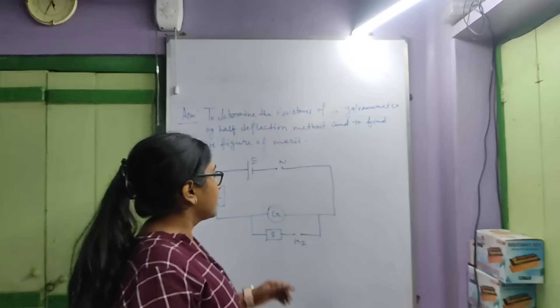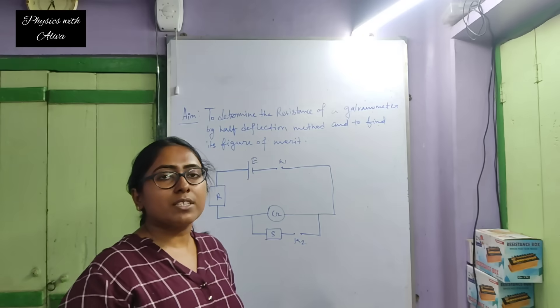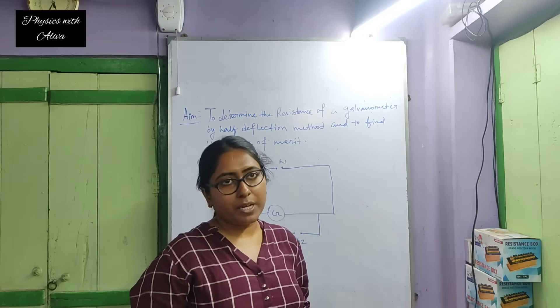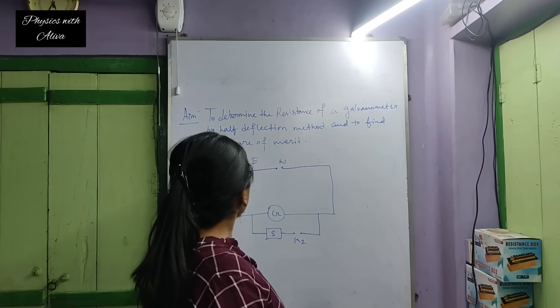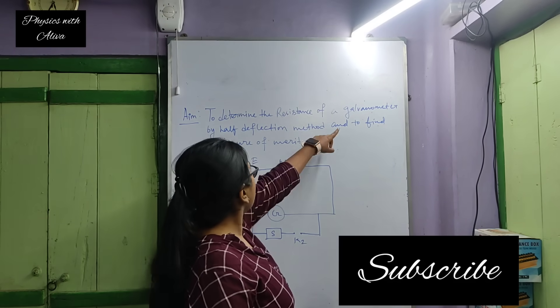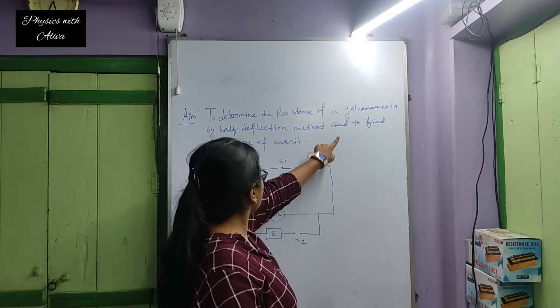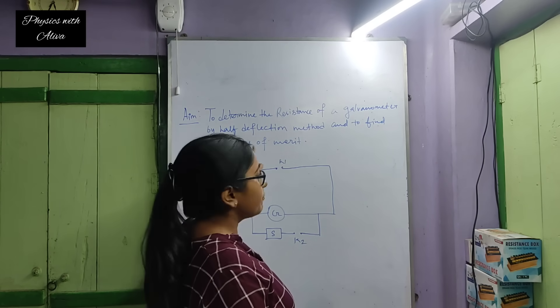Hello everyone, this is our today's practical. At first we will discuss the aim of the practical. The aim is to determine the resistance of a galvanometer by half deflection method and to find the figure of merit.